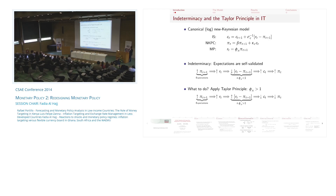Let me briefly review what I mean by indeterminacy in New Keynesian models and link it to the Taylor principle. Consider a closed-economy New Keynesian model with three equations: an IS curve relating consumption to the real interest rate (nominal rate minus inflation); a New Keynesian Phillips curve relating inflation to demand; and a forward-looking monetary policy rule in which the central bank moves the nominal interest rate in response to expected future inflation. The coefficient phi plays a critical role in the indeterminacy issue.